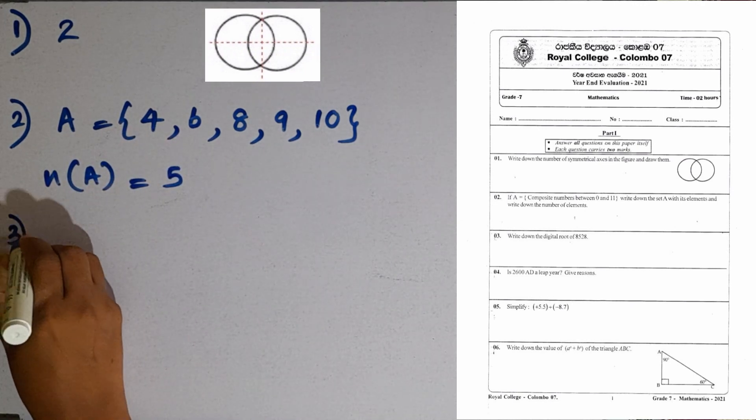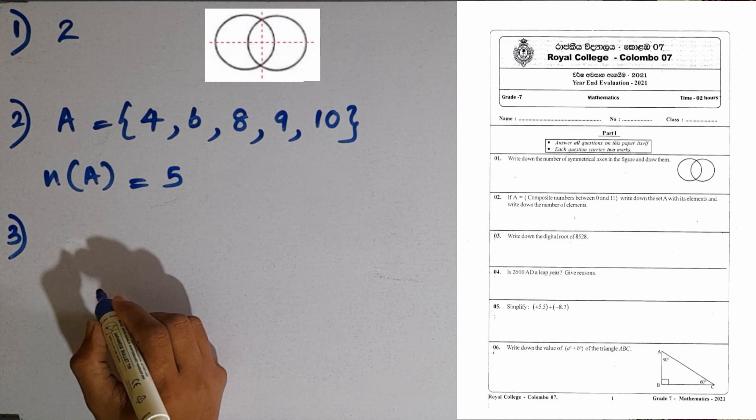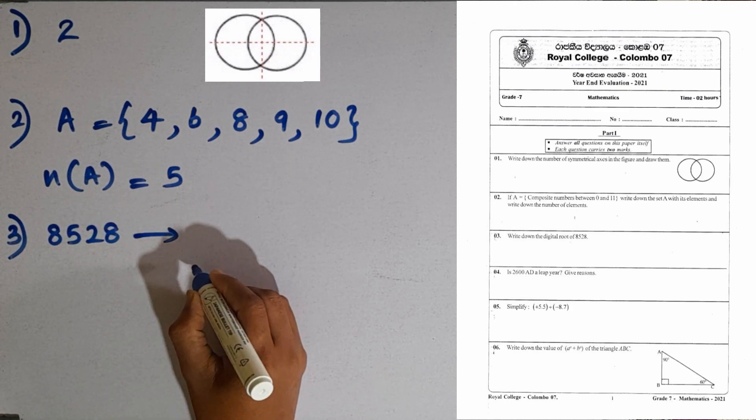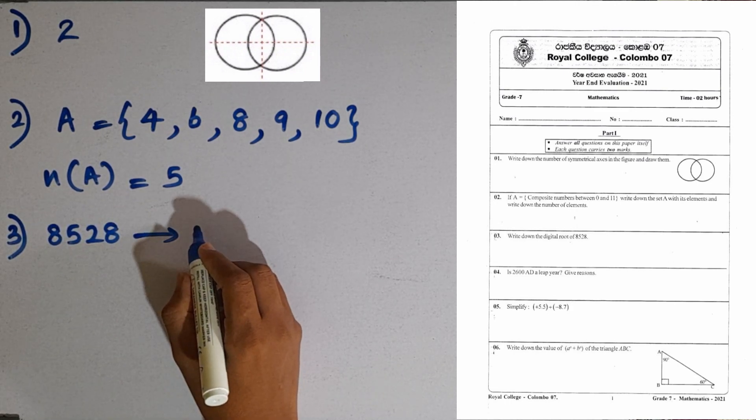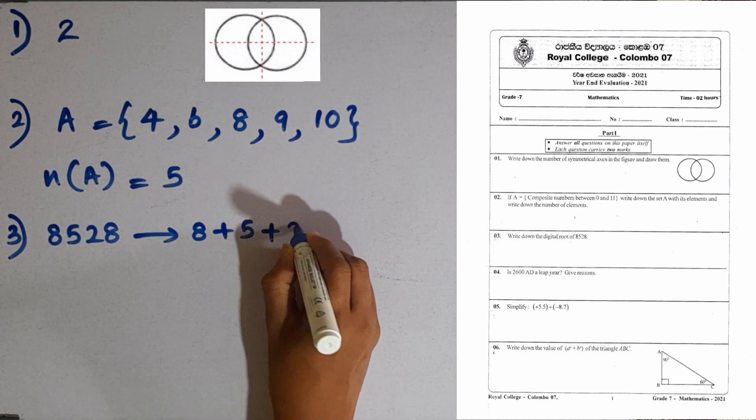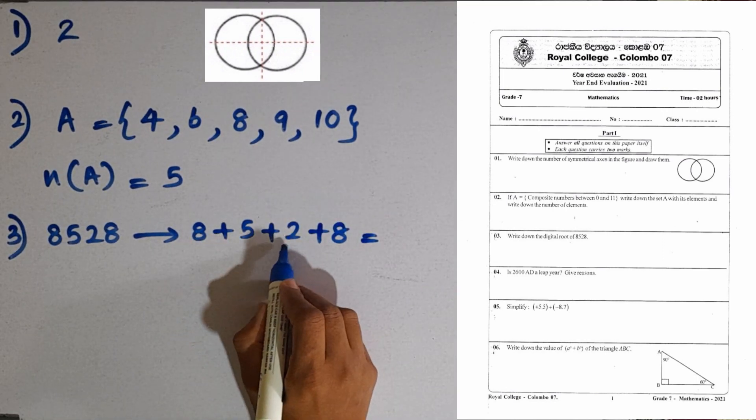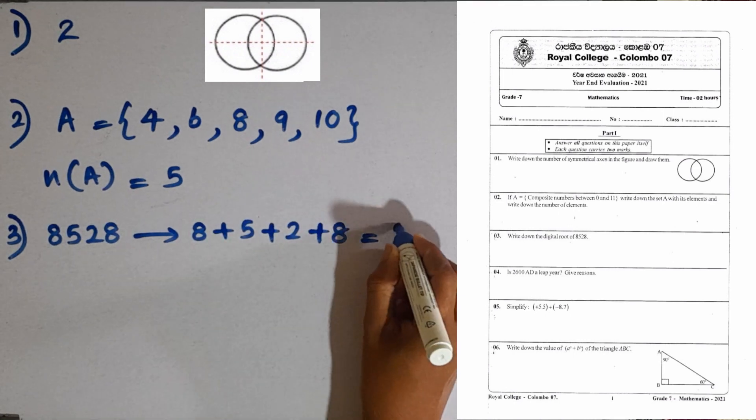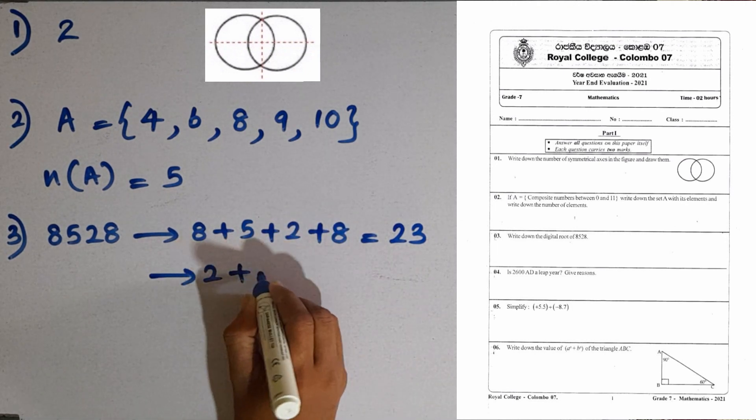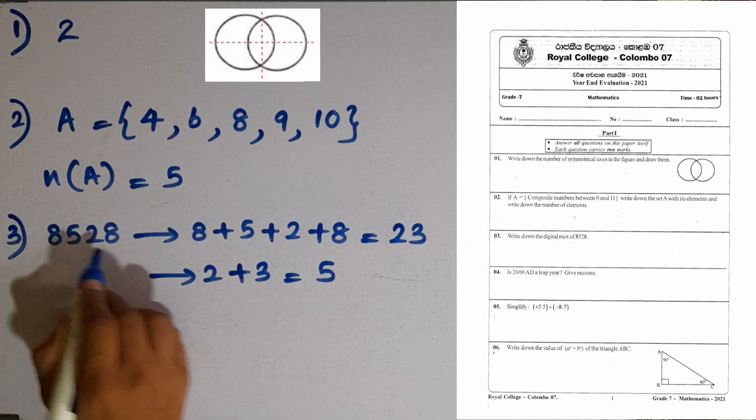Then question number 3. Write down the digital root of 8,528. We can add all the digits up to 1 digit here. 8 plus 5 plus 2 plus 8. What is the addition here? 10, 15. Then 15 plus 8 is 23. Now, again we can add the 2 digits here. 2 plus 3. The value is 5. So, 5 is the digital root of this number.